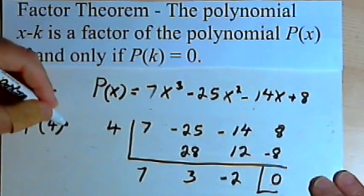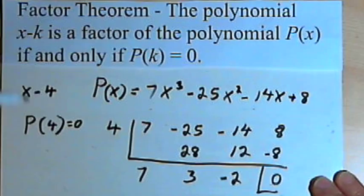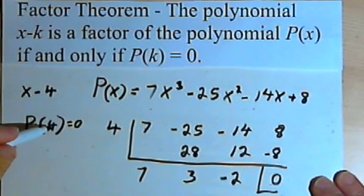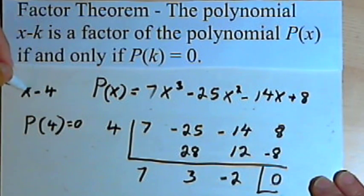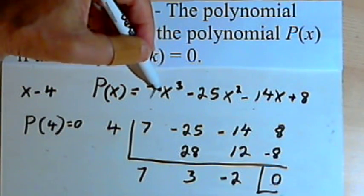So P(4) equals zero. If P(4) is equal to zero, then that means that x minus 4 is a factor of this polynomial.